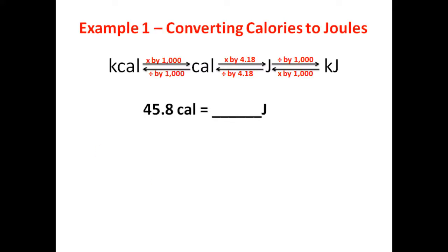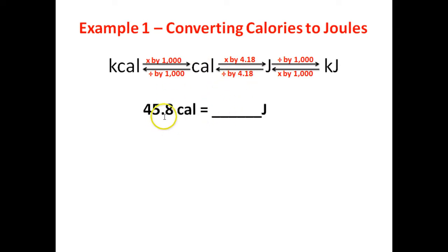In this example, we're going to learn how to convert calories to joules. And if you have this little flow diagram right here, this should help you solve any types of problems where you're converting calories to joules, or joules to calories, or kilocalories to joules, et cetera. So let's take a look at a problem. We've got 45.8 calories and we want to know how many joules this is. As you look right here, you can see that the only thing you need to do is multiply by 4.18. But let's take a look at why.